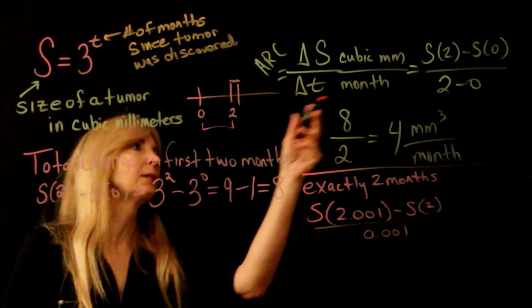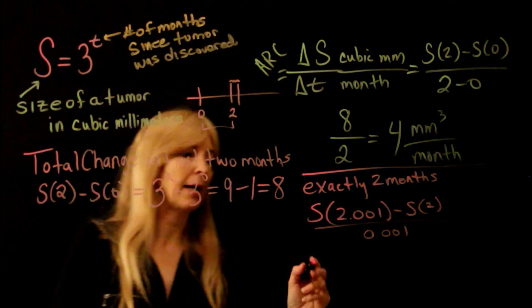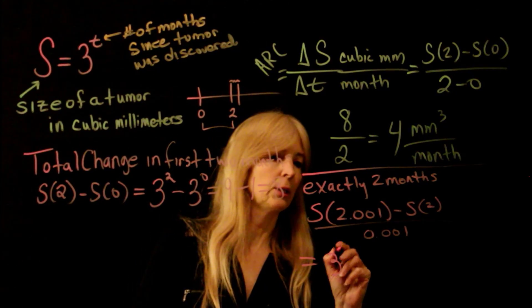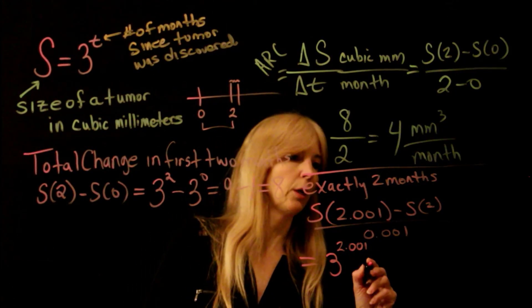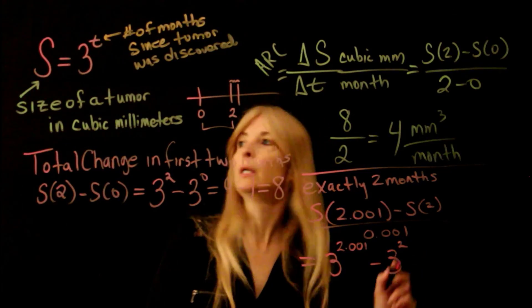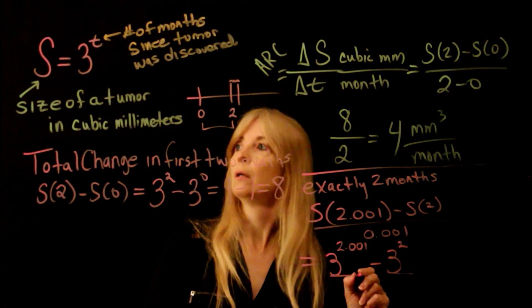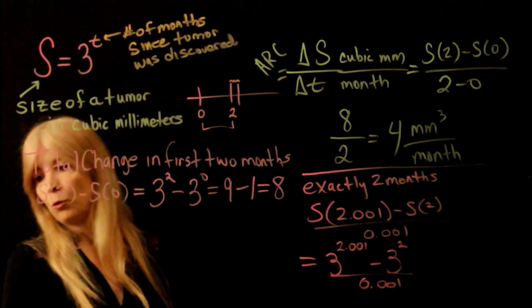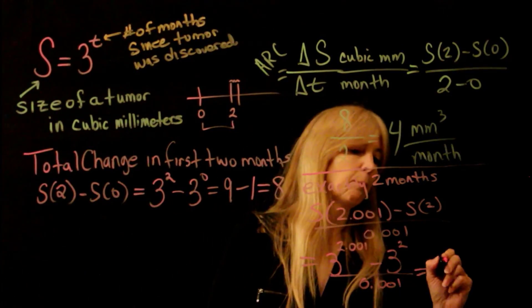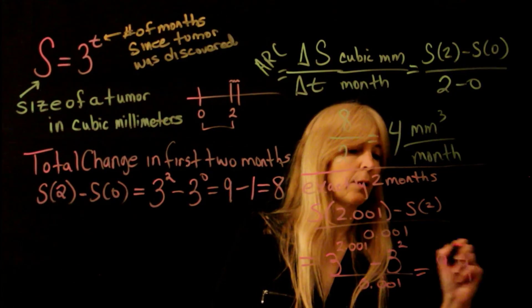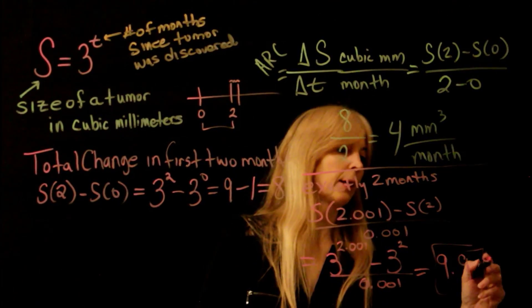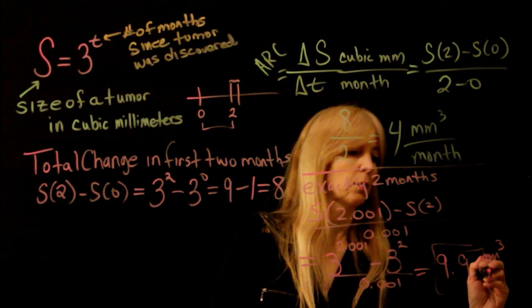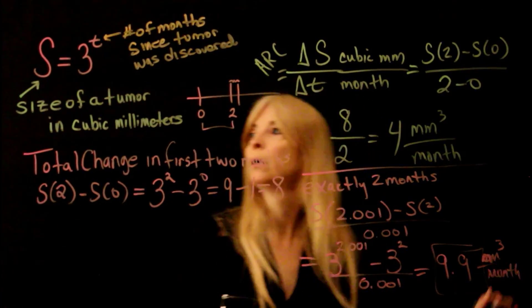Okay, so doing so, I plug all this back in, make sure I stay on the screen. So I'm going to get 3 to the 2.001 minus 3 squared, getting low, 0.001. And if you do that, you should get about 9.89 or 9.9. And once again, oops, cubic millimeters per month.